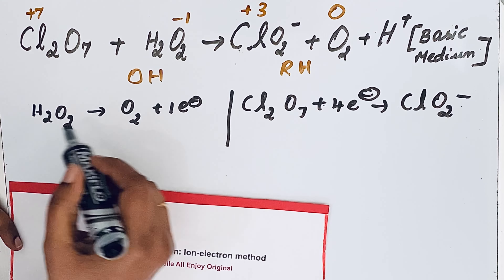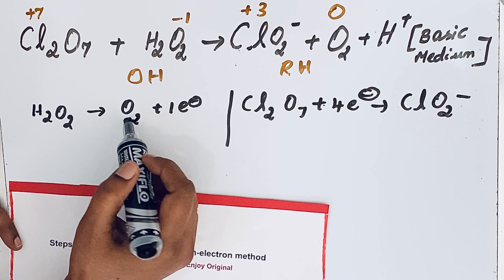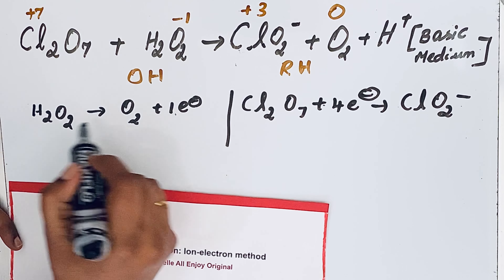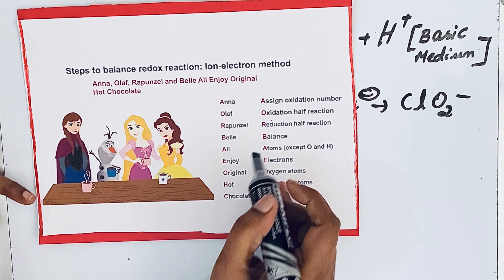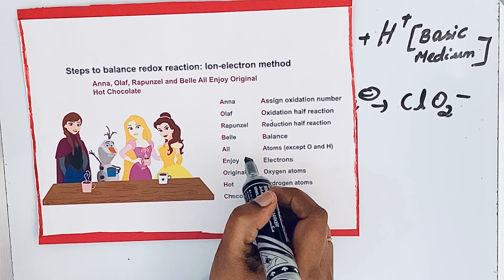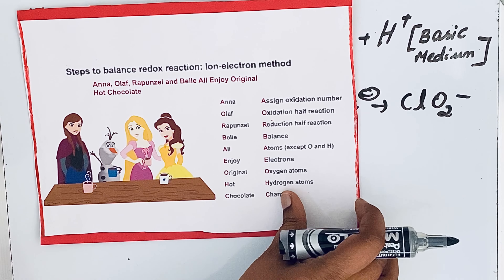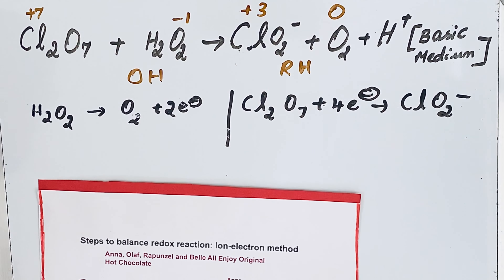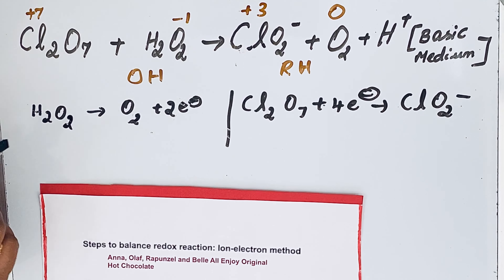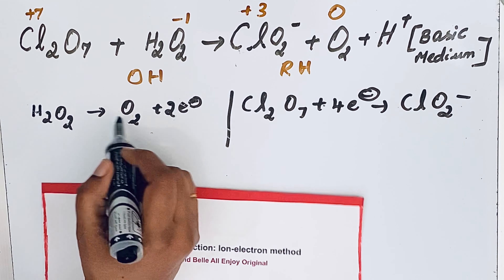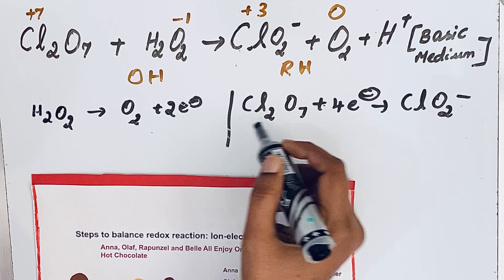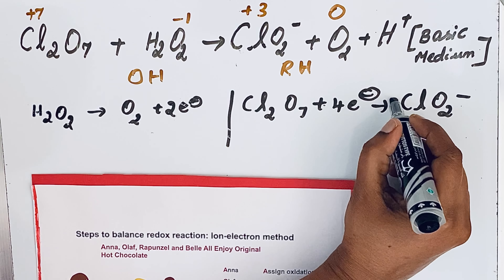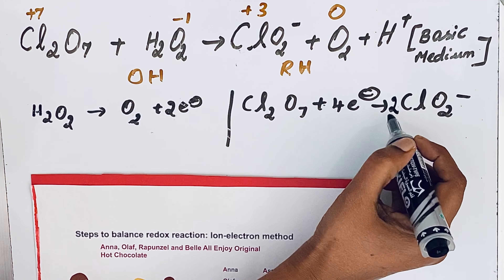We write the number of electrons lost or gained per atom, but since there are two oxygen atoms in H₂O₂, it is not one electron but two electrons lost. Now, the next step is to balance atoms — except oxygen and hydrogen. Note that H₂O₂ is an exceptional case where the number of oxygen atoms is already equal. In Cl₂O₇ there are two chlorine atoms, but in ClO₂⁻ there is only one, so we write a coefficient of 2.